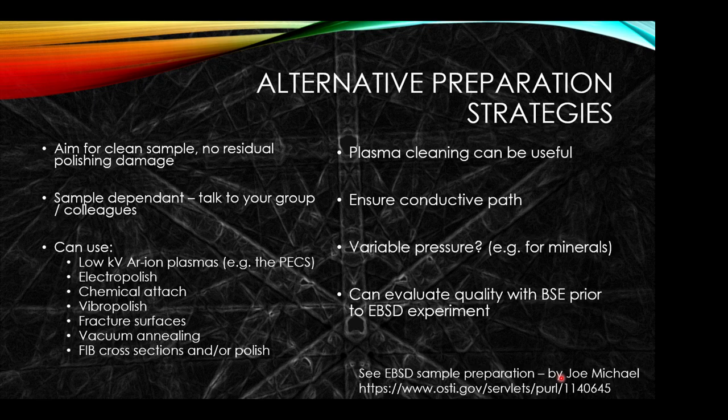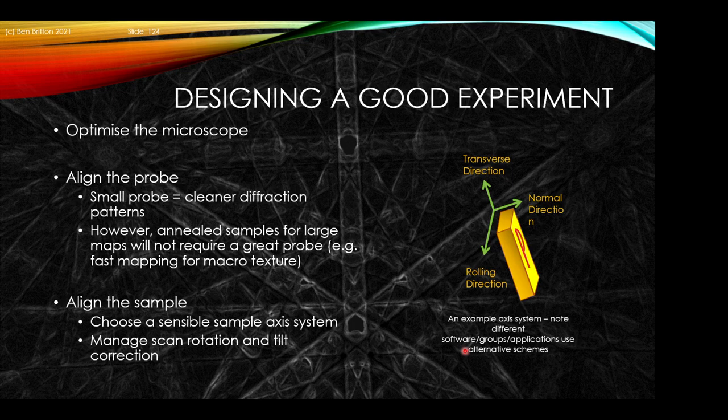There are a whole range of cool tips and tricks by Dr. Joe Michael presented in a Sandia paper — well worth a look. Once you've got good sample prep you need to optimize the microscope. You want to align the probe — see the SEM lecture notes on how to do that. A smaller probe gives you cleaner diffraction patterns, but do recall that annealed samples with large maps do not need a great probe, so you can use a cheaper microscope for those. You'll want to align the sample as well as possible, choose a sensible sample axis system, and manage and correct the scan rotation and tilt correction — see earlier sections of this lecture for that information.